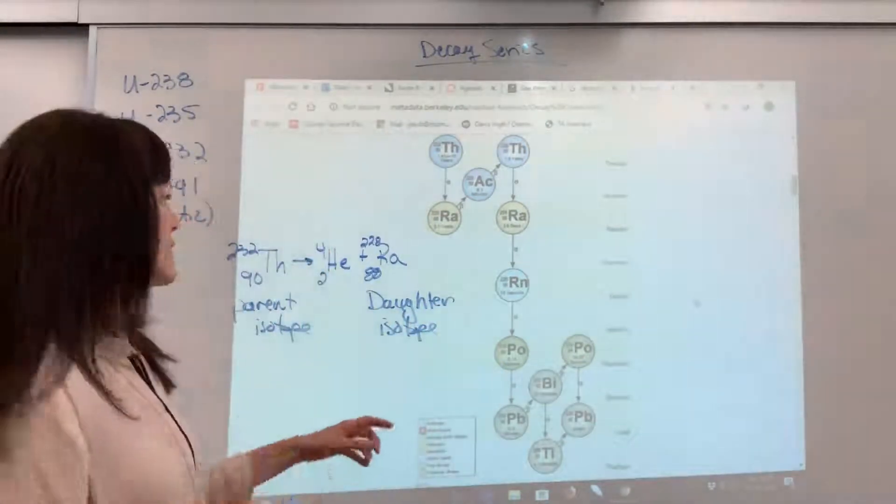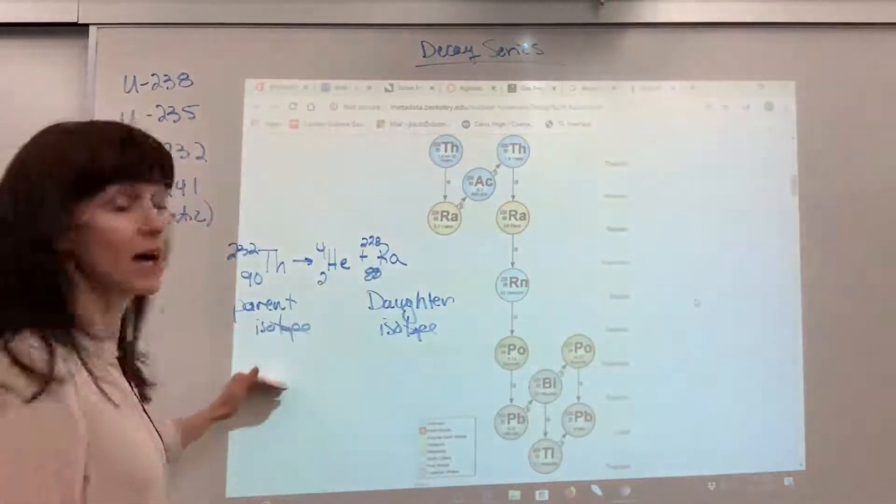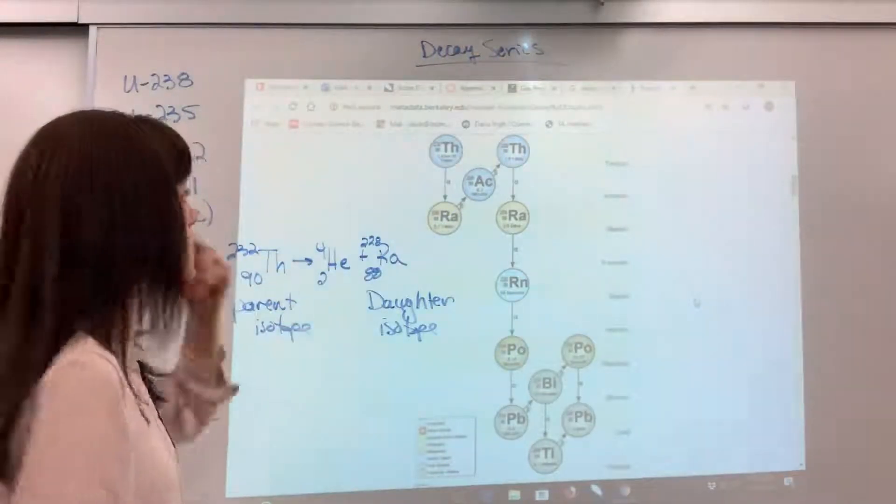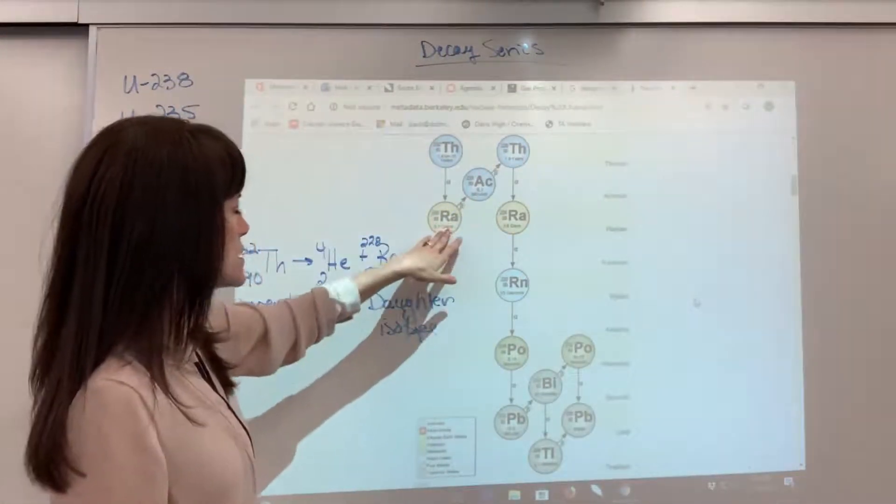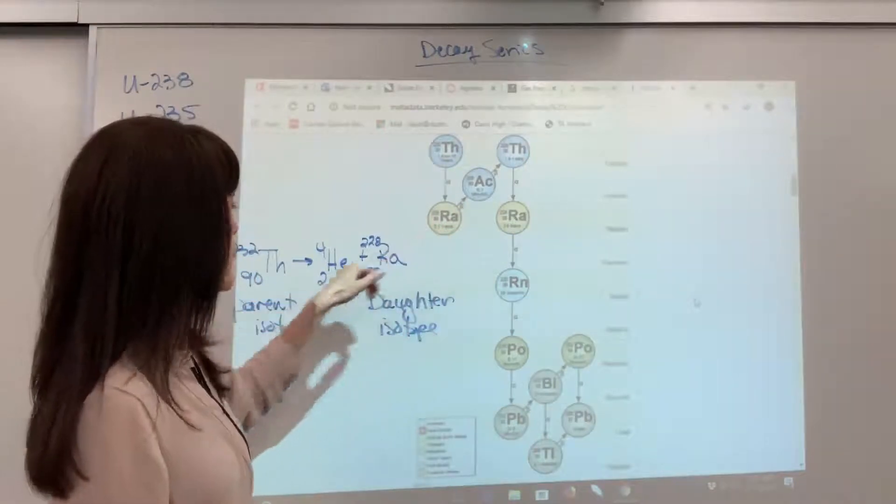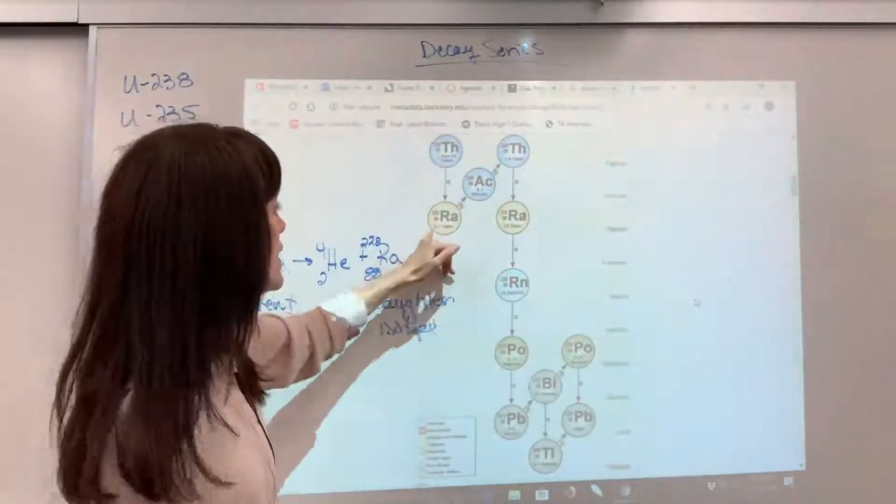Now in the decay series, the daughter isotope will then become the parent isotope. So thorium decays, produces this radium-228 by releasing the alpha particle. And now look at this.